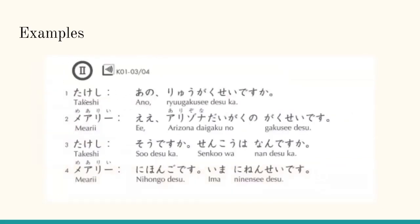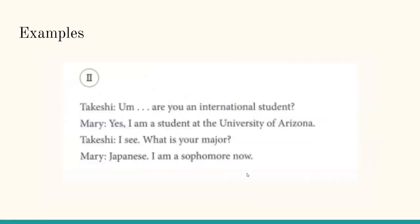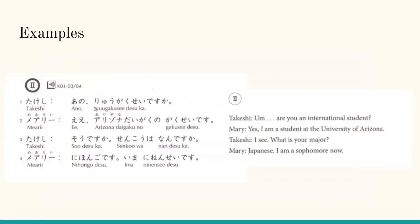Juuni-ji han desu means it's half past twelve. Arigatou gozaimasu means thank you. Iie means you're welcome. This is another example. Takeshi: Ano, ryuugakusei desu ka? Meari: Ee, Arizona daigaku no gakusei desu. Takeshi: Sou desu ka? Senkou wa nan desu ka? Meari: Nihongo desu. Ima ninensei desu. This is the translation. Ano means um. Ryuugakusei desu ka means are you an international student?